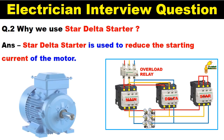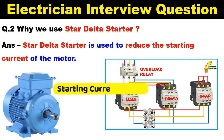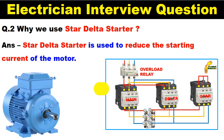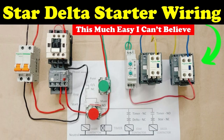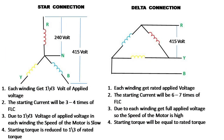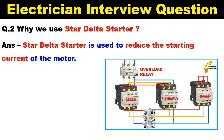As you know, the starting current of an induction motor is very high. So what we do is we use a star delta starter. After connecting the star delta starter, the starting current gets reduced. So your answer is that we use star delta starter for reducing starting current.